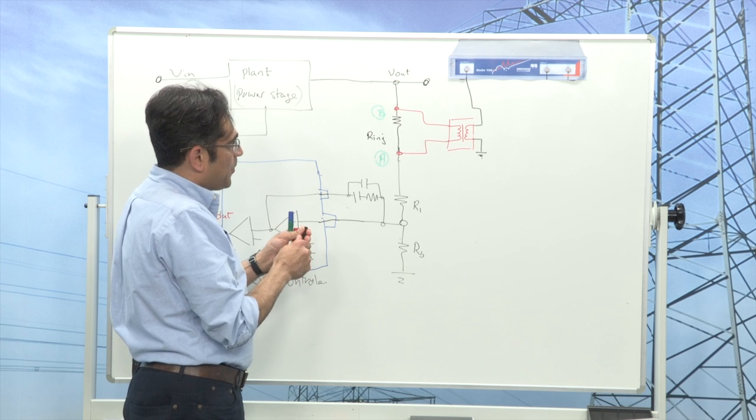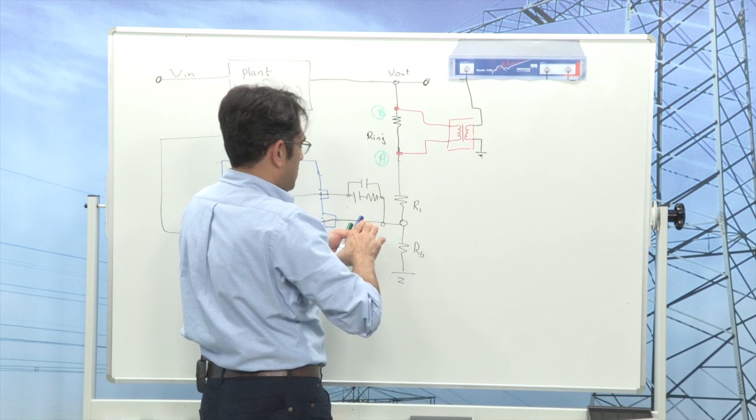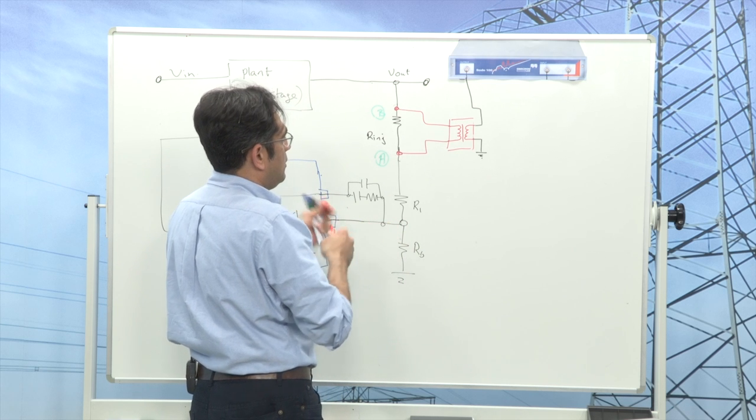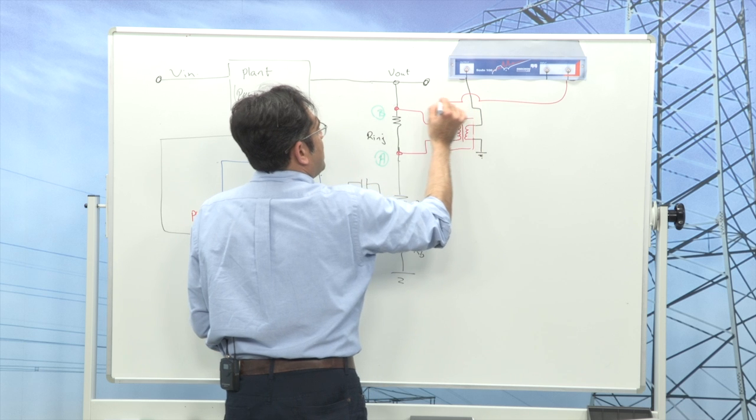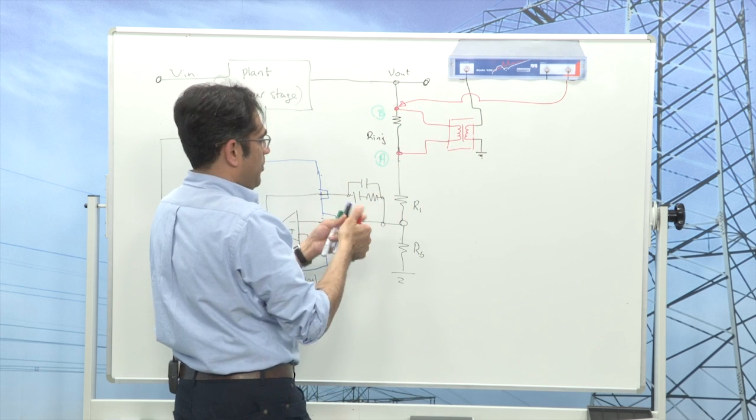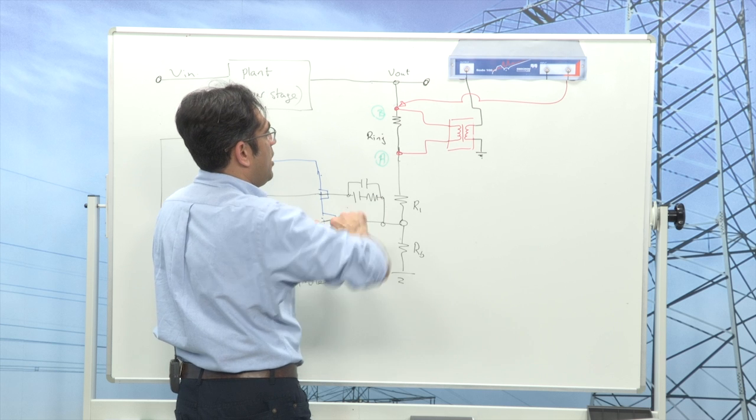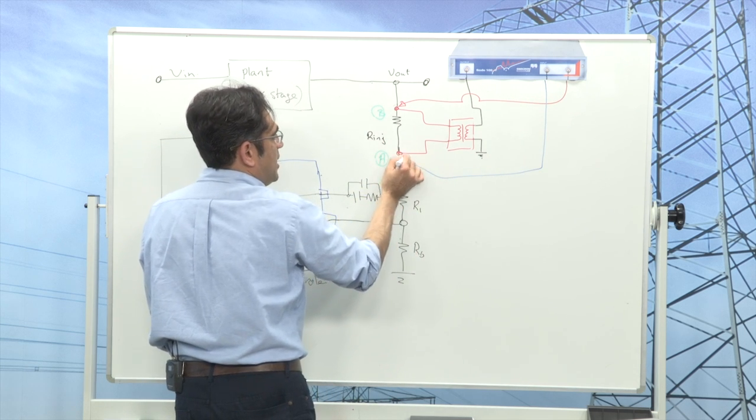Now then, if I put channel 2 of my Bode at this point here with a probe, this is connected to an oscilloscope probe, and I put channel 1 at this point here.